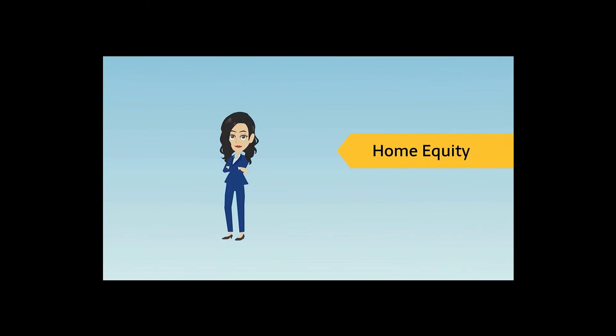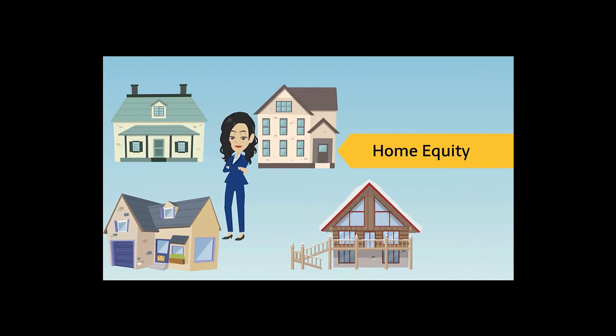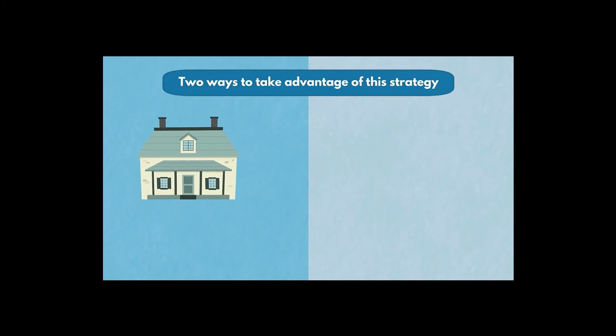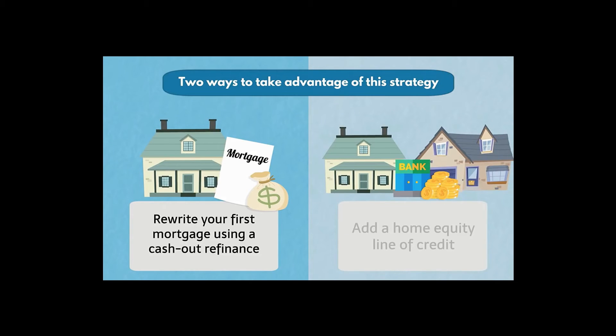If you're a veteran investor and already own a property, using home equity is a way to invest more real estate without having to use your liquid capital. There are two ways to take advantage of this strategy. One is to rewrite your first mortgage using a cash-out refinance. The other is to keep the first loan in place, add a home equity line of credit, and use that money to buy a new investment property.